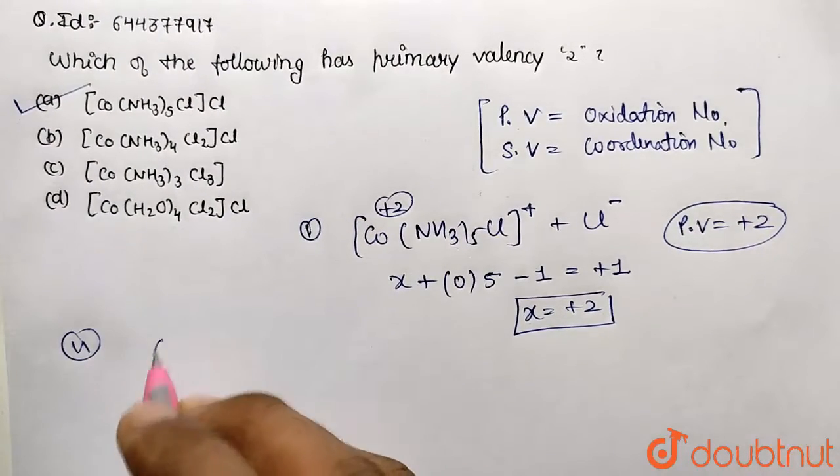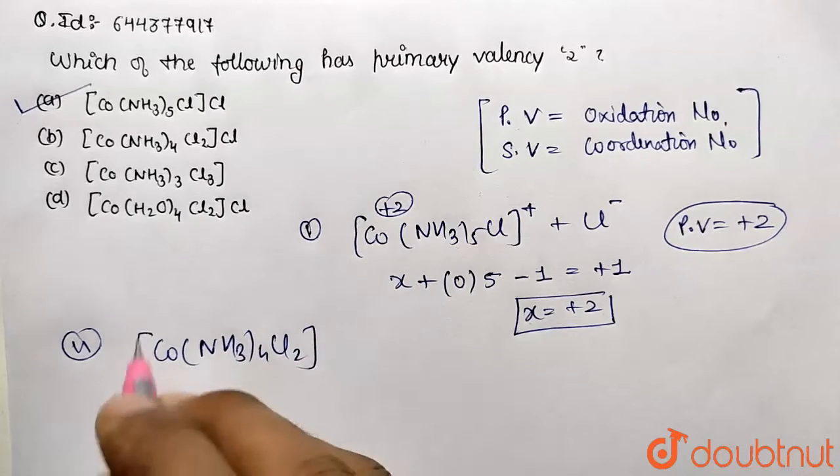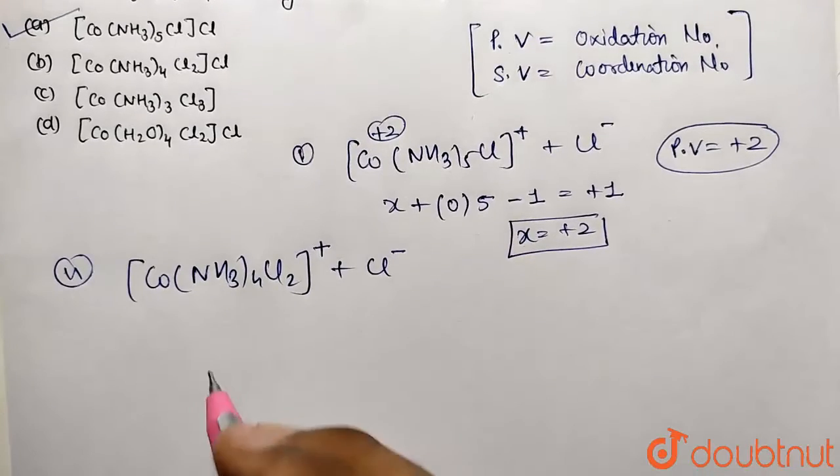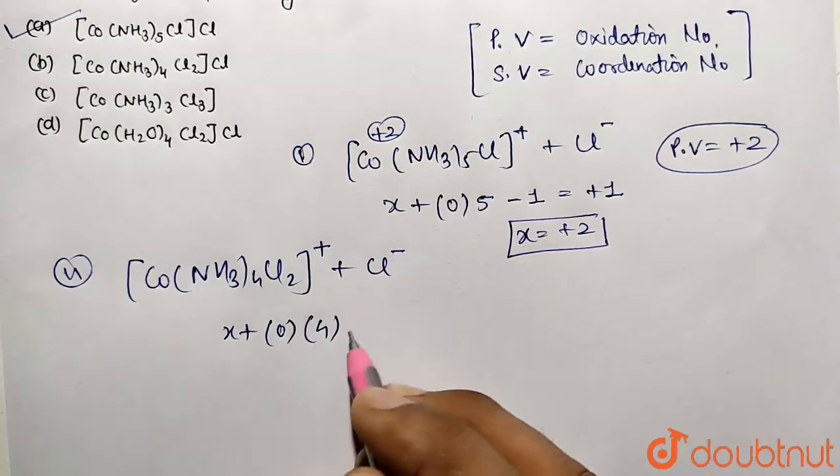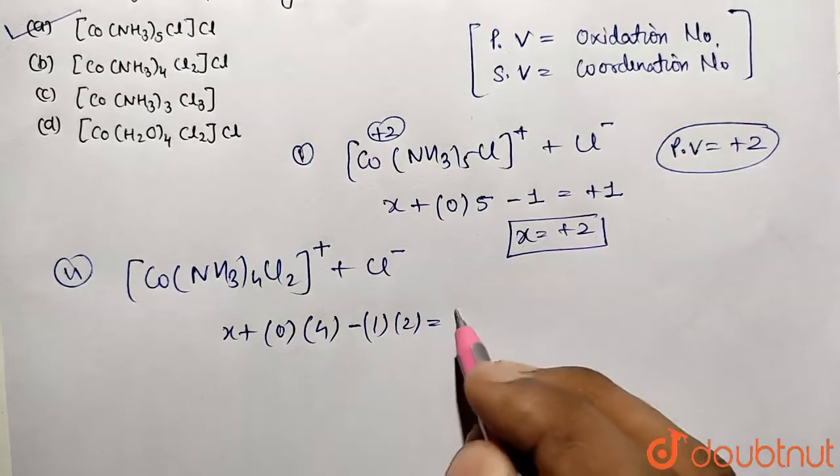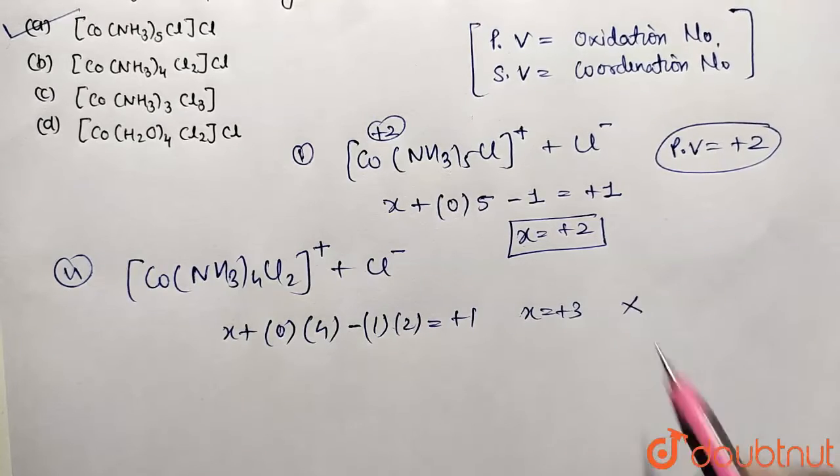Similarly, you can work for the other set of options also. If I write second one, then it is going to be [Co(NH3)4Cl2]. And upon ionizing, it is going to give Cl minus and positive over here. So if I work on the complex, this is going to be X neutral ligand, so 0 multiplied by 4, and this is minus 1 multiplied by 2. This is equivalent to positive 1 on the coordination sphere. So this is going to come value of plus 3. So it is not our answer.